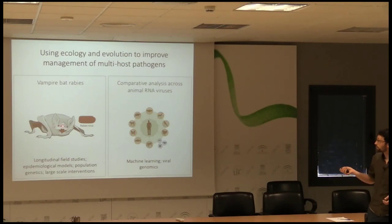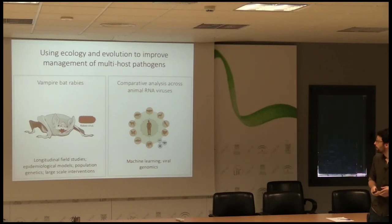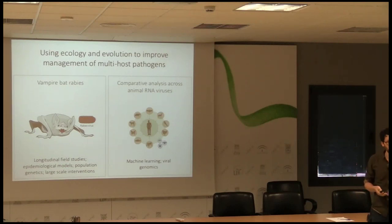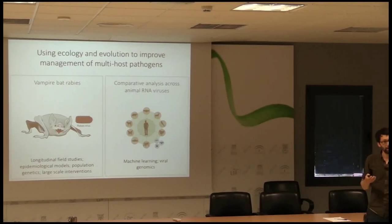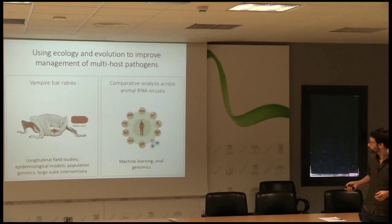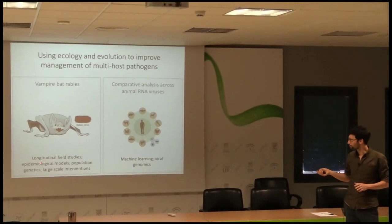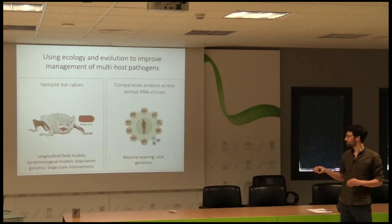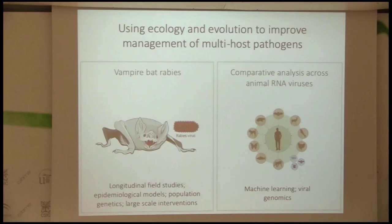In the first part of the talk, I'll be focusing on vampire bat transmitted rabies, which is the work that Andrew mentioned in Peru. In the second part, I'll be shifting gears to a much broader scale of analysis, thinking about how we can infer aspects of the ecology of host-virus relationships directly from viral genome sequences. The first part will be a mixture of methods: longitudinal field studies, epidemiological modeling, population genetics, and analysis of large-scale interventions. The second part will be focused on machine learning and viral genomics.